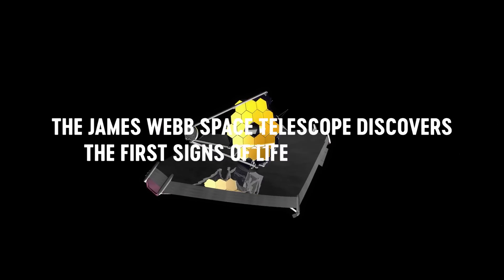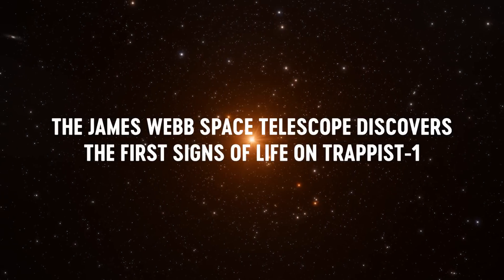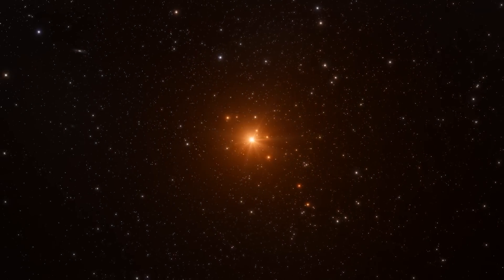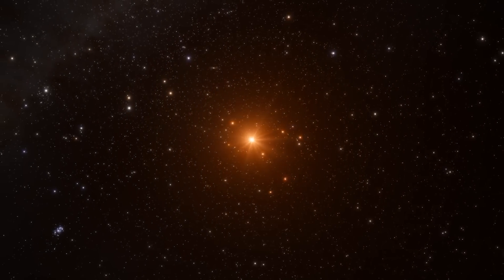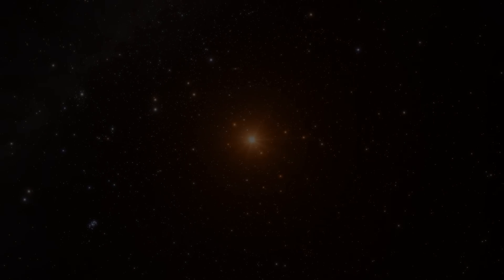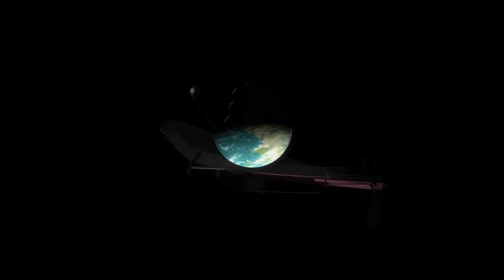The James Webb Telescope discovers the first signs of life on TRAPPIST-1. The TRAPPIST-1 planetary system is one of the few star systems known to host seven Earth-sized planets that may or may not support life.